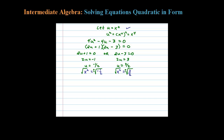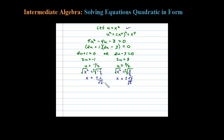Taking the square root of both sides, plus or minus, leaves us with x equals plus or minus the square root of negative 1, which is i, over the square root of 2. Or over here, x equals plus or minus the square root of 3 over the square root of 2. At this point we have radicals in the denominator, so we need to rationalize.